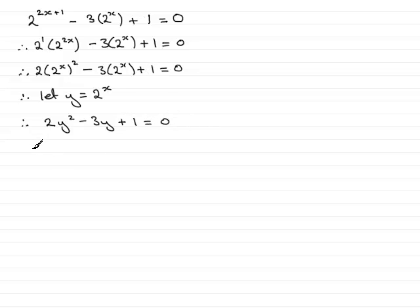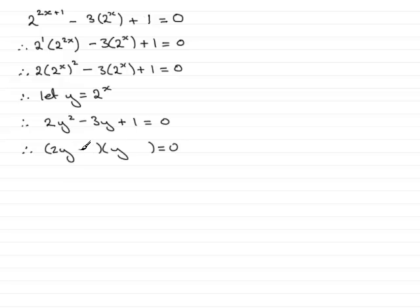And I can factorize this into a couple of brackets. If I struggle factorizing it, or if it doesn't factorize, I can always use the quadratic formula. This factorizes to 2y minus 1 and y minus 1. Check it out and you'll see that gives you 2y squared minus 3y plus 1.